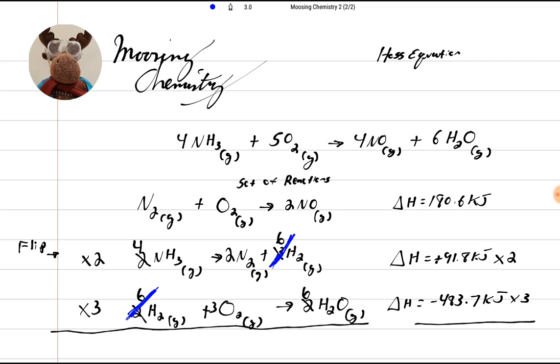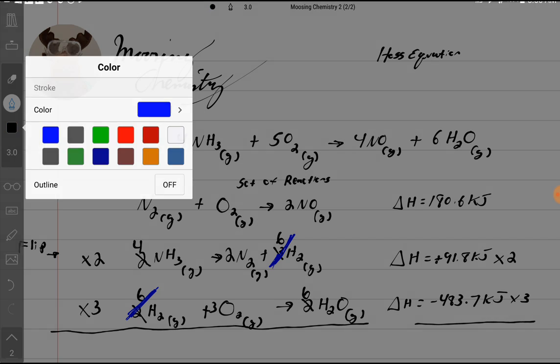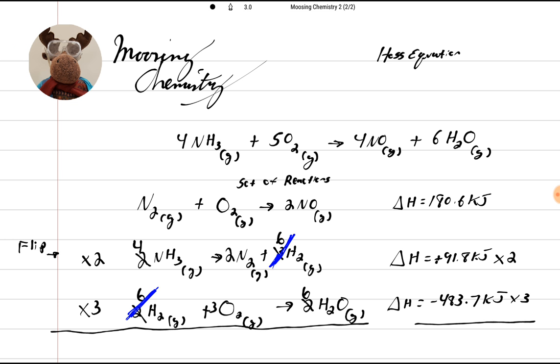So those hydrogens are gone. We don't have to deal with that 6 anymore. All that's gone. So hydrogen's gone. Good deal. Now, what about our waters? Is water on that side? It is. What about our nitrogens? Oh, look. We have two nitrogens here, right? So that means we've got to multiply our first equation by 2.